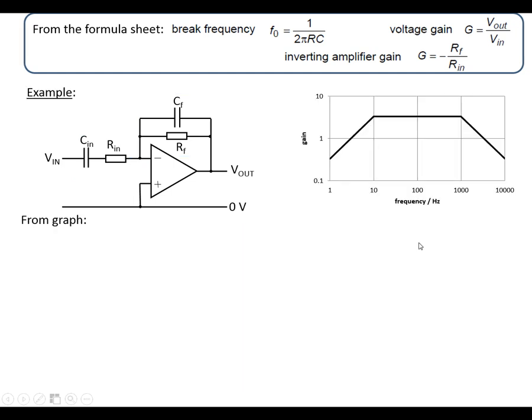Now we're going to look at an example. Say we have this characteristic graph here. What we can work out from the graph is the maximum gain. The maximum gain in this case is 3.2. On the logarithmic graph, midway between 1 and 10 is about 3.2.